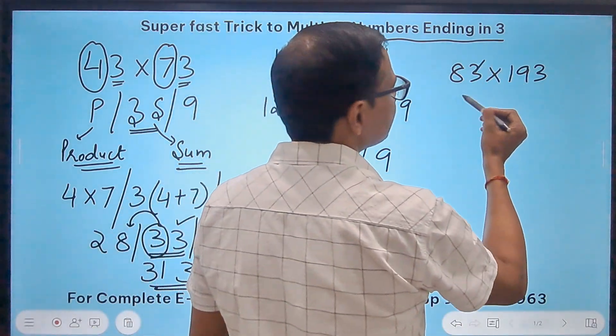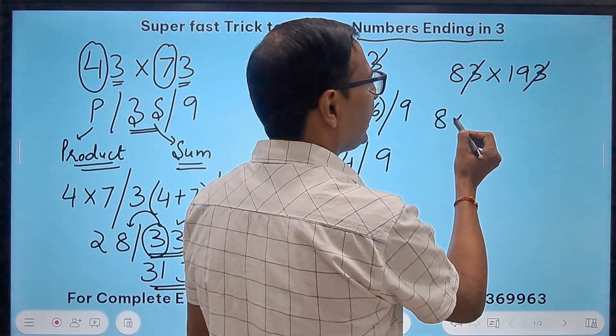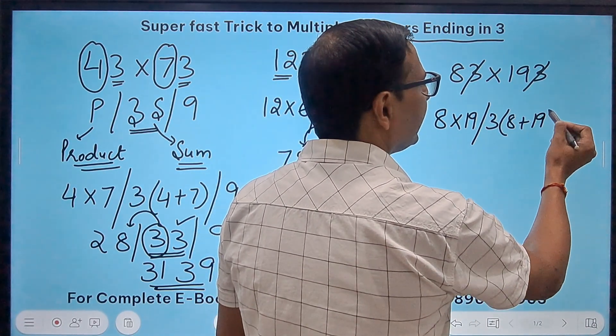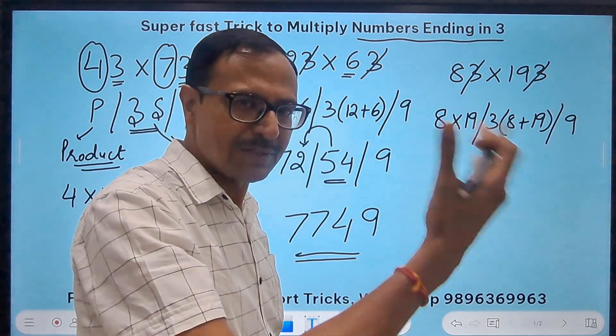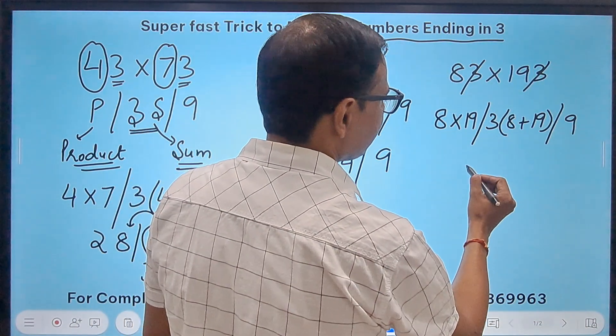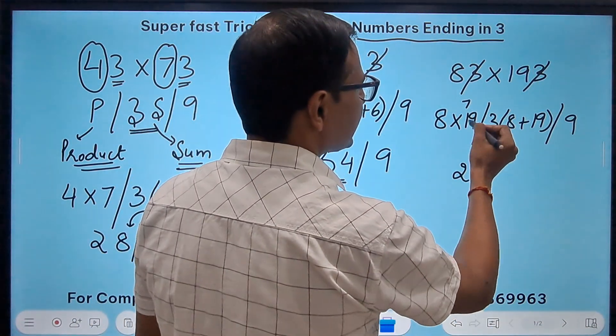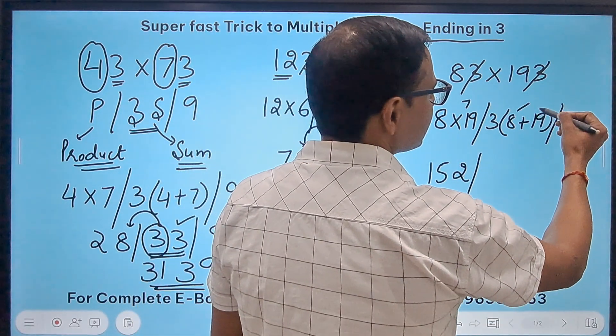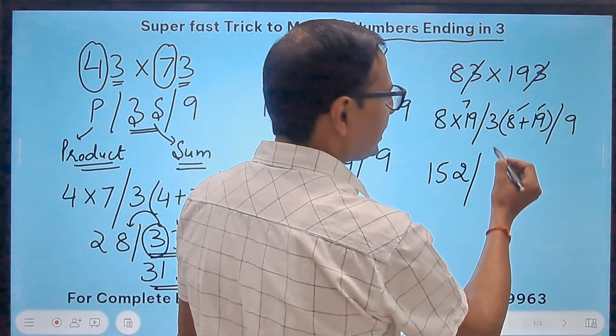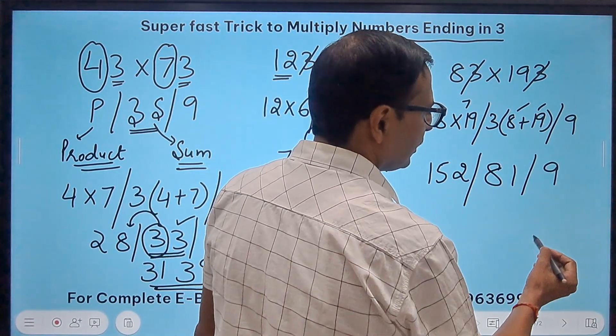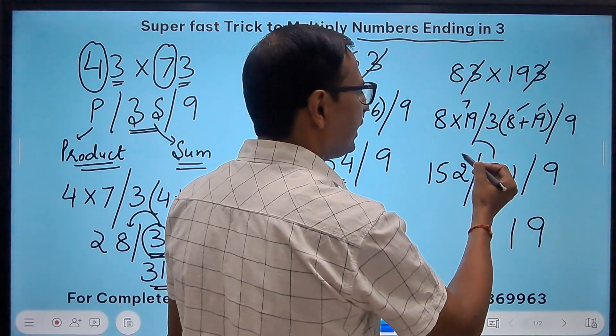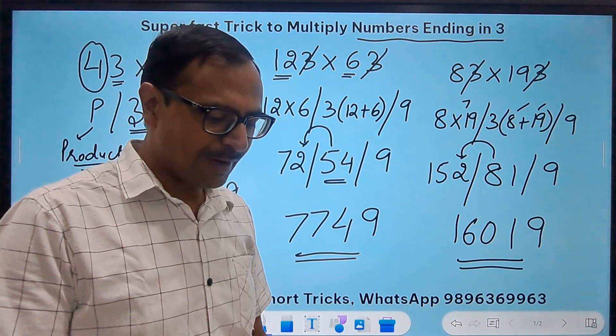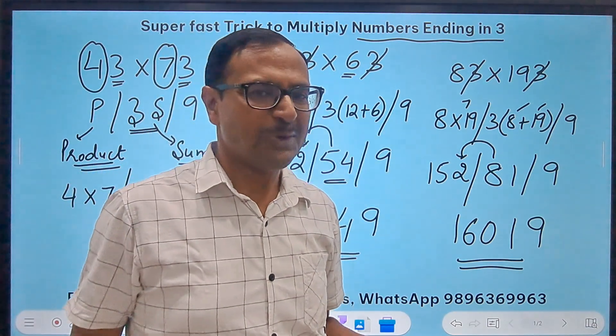So forget the 3s, we have 8 and 19. So I want 8 and 19 the product, then 3 times 8 plus 19, and finally the 9. P3S9. 8 times 19 is 152. This is 27, and 27 times 3 is 81, and finally the 9. So 9, 1, 8 added to 152 gives you 160, and the answer is 16019.